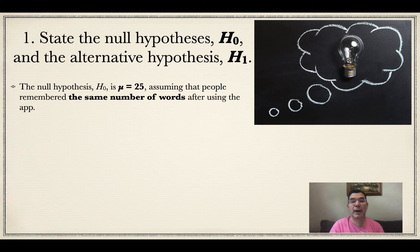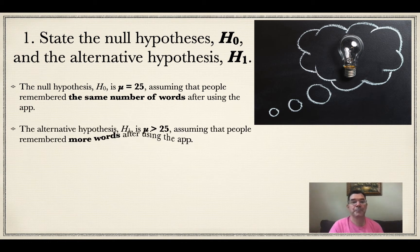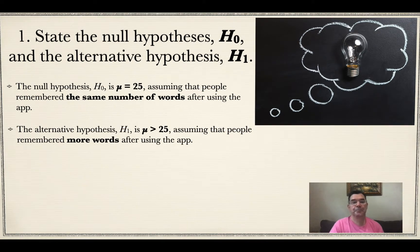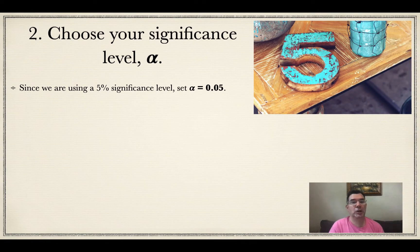The null hypothesis is always the situation where nothing changes. Everything stays the same and there was no effect of using the app at all. So the null hypothesis is that mu equals 25, the same mean that it was before, assuming that people remember the same number of words even after using the app. The alternative hypothesis is that the new mean is greater than 25, meaning that people are on average remembering more words after using the app.